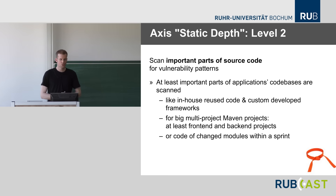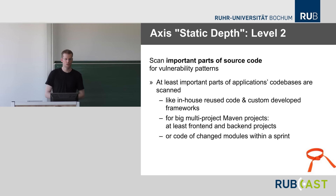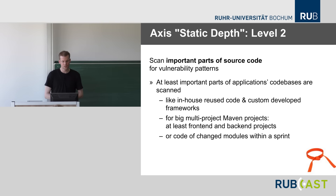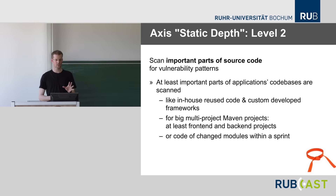For the client-side world — JavaScript libraries — use RetireJS in your build chain. It scans the application's JavaScript files against a list of known vulnerable ones. A Maven plugin is available, and it can also be used as a CLI. Level 2, the orange belt for static depth, is to scan important parts of your own source code for security vulnerabilities — better yet all of it — with optionally a delta-based approach to scan at least the code that changed during the build.